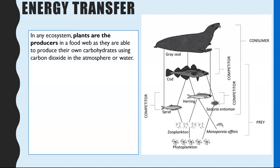So energy transfer — this is quite similar to GCSE because it links to energy being transferred through a food web. In any ecosystem you should be familiar with the concept that plants are the producers, so they're always at the start of a food chain. They produce their own carbohydrates or organic matter using carbon dioxide from the atmosphere and water.